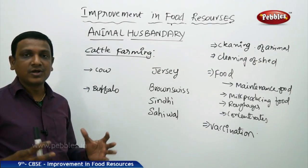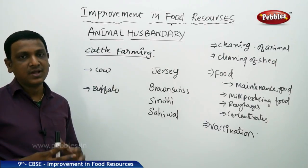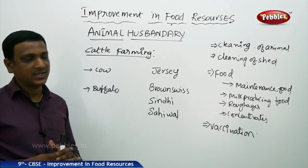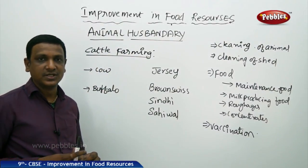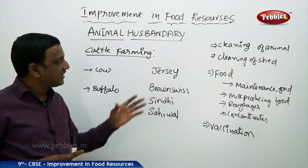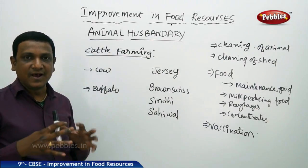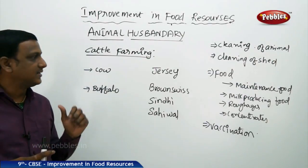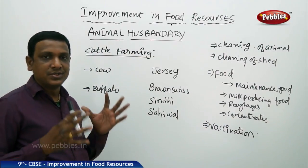Agricultural scientists are cross-breeding foreign varieties with local varieties. Jersey and Brown Swiss are foreign varieties with very good milk production. Sindhi and Sahiwal are local varieties with good disease resistance. When these are cross-bred, the hybrid offspring have the good qualities of both — giving more milk while also having resistance to diseases. This hybridization helps get good animal varieties with good physical strength and good milk production.